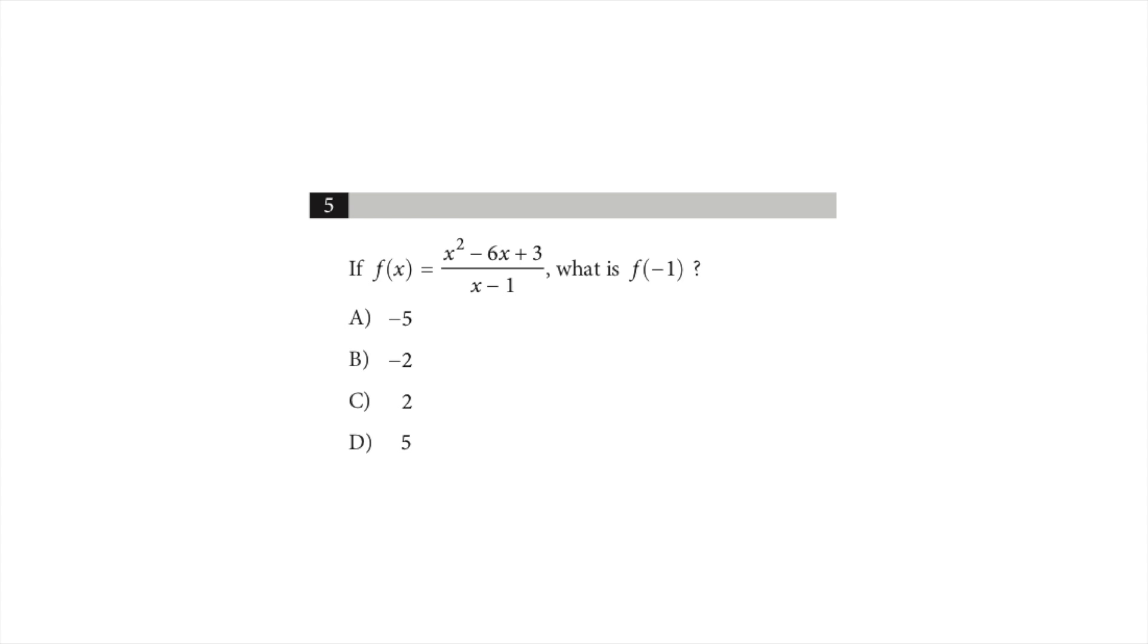So plugging in minus one for x, we have in the numerator minus one squared, which is one, minus six times minus one, which is plus six, plus three, ten. So in the numerator, we have ten.